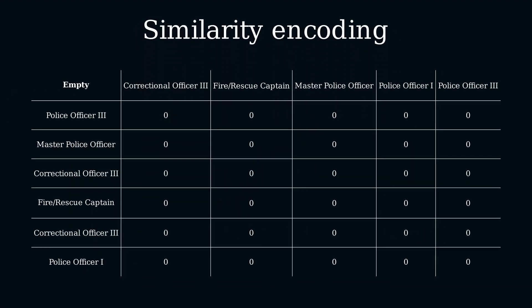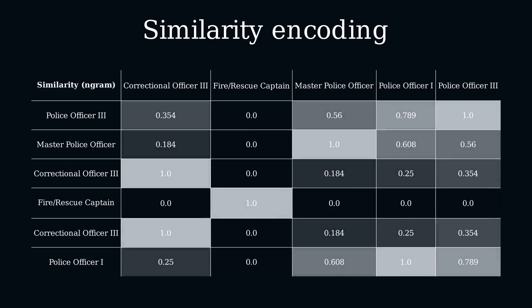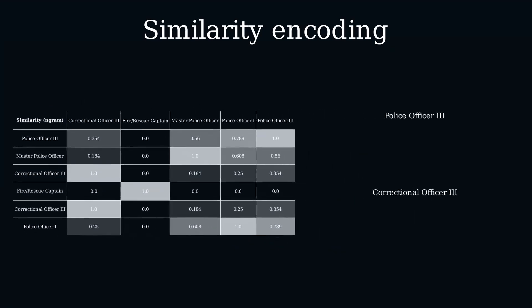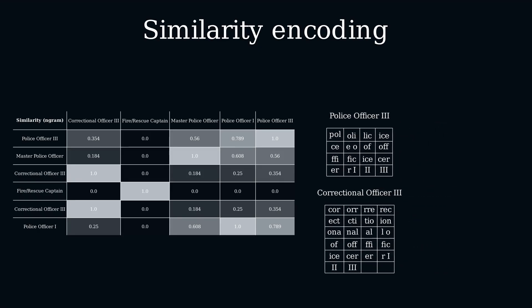Similarity encoding gives a similar result to one-hot, except that instead of using binary values — ones and zeros — we actually encode the similarity given a metric between each pair of samples. It works by taking two samples, which it will then decompose into meaningful representations, usually a character-level n-gram. We can construct this representation by dissecting the string into groups of n adjacent characters. For this example, we'll use groups of 3 characters, therefore 3-grams.